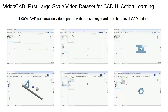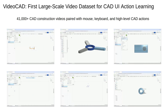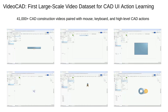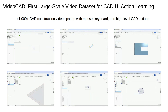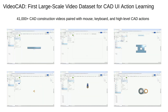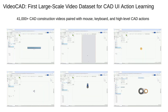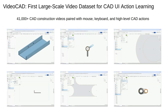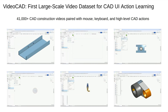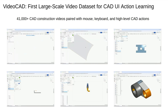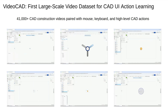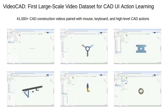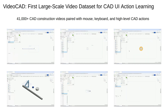No prior dataset captures how designers interact with the CAD interface. VideoCAD provides 41,000 fully annotated CAD construction videos in Onshape. Here you can see examples of full modeling sequences: sketching, drawing primitives, extruding, and watching the 3D geometry evolve.